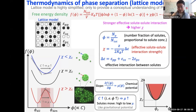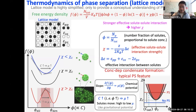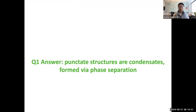Looking at the phase diagram: when chi is below the critical value, no phase separation occurs no matter how high the protein concentration is. But above the critical value, phase separation can happen if the protein concentration reaches the saturation concentration, or C-sat. That is why concentration-dependent condensate formation is a typical feature of phase separation. So the answer to the first question is that these punctate structures are condensates that form via phase separation.